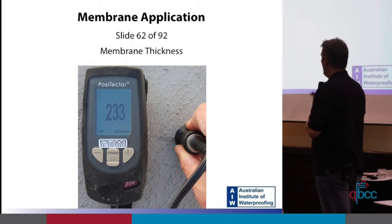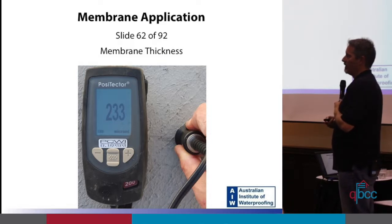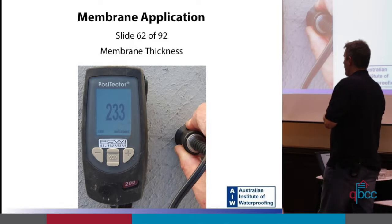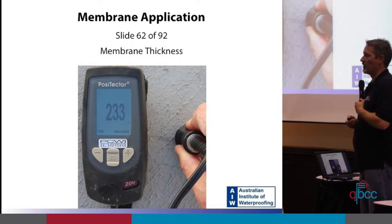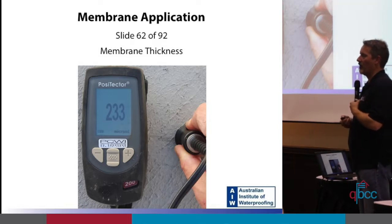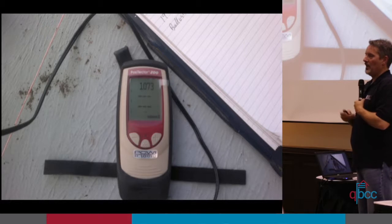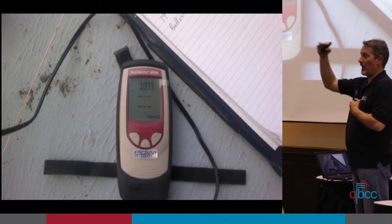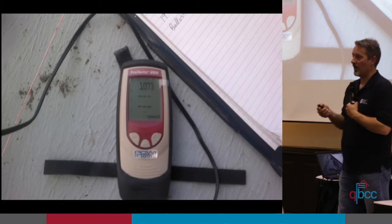To have a successful waterproofing system, you generally find issues with membrane application starting with membrane thickness. Here you've got an ultrasonic thickness gauge and it's measured 233 microns. For the vast majority of membranes that should read a thousand — and that's not even the lowest reading I've ever taken. Different membranes on the market require 800, 700, or even 1200 microns. It's all in the data sheet — what the required dry film thickness is.